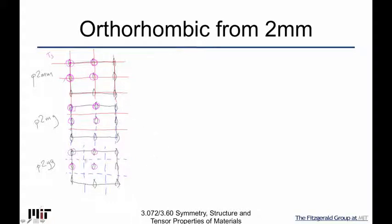And we end up with, if we choose the T3 where we have 0, 0, Z, which is straight above, that gives us the orthorhombic primitive.